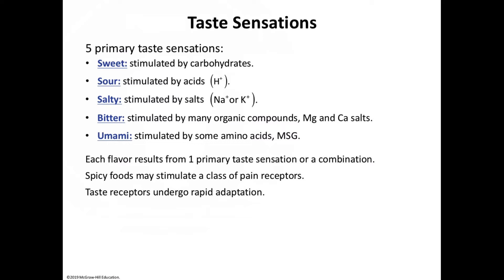Umami is known as the 'delicious taste' — a subtle taste discovered by the Japanese, elicited by amino acids glutamate and aspartate, which are responsible for the beef taste of steak. It is also elicited by monosodium glutamate (MSG). The characteristic tang of aging cheese and flavors in prepared foods involve MSG, which is made from glutamic acid that also stimulates umami receptors.